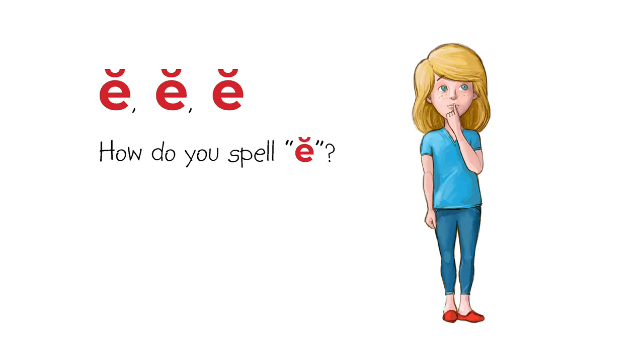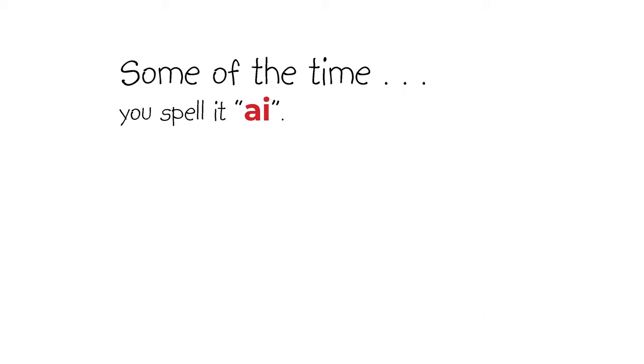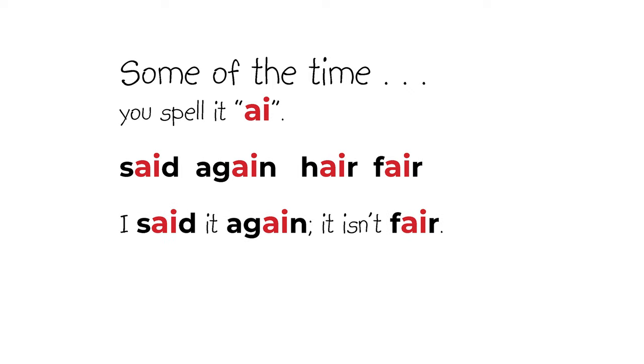E, E, E. How do you spell E? Some of the time, you spell it A-I. Said, again. Hair, fair. I said it again. It isn't fair. You have one. They have a pair.